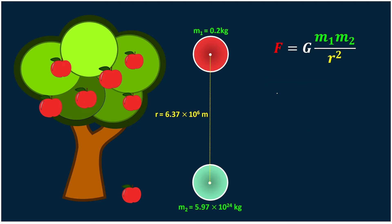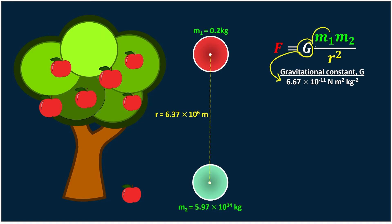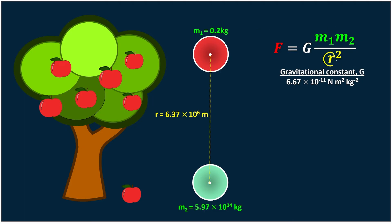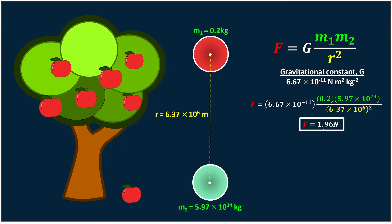Now we can use the formula we learned to calculate the gravitational force between the apple and the Earth. Press the calculator yourself so your muscle memory can get used to these calculations. G is the gravitational constant, M1 is the mass of the apple, M2 is the mass of the Earth, and R is the distance. Be very careful — you must square the distance, as forgetting to do so is a common mistake.